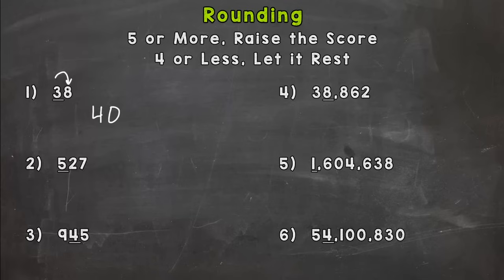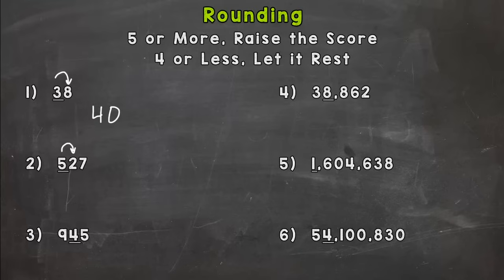Let's take a look at number two: 527. We are rounding to the hundreds place, seeing if this number is closer to 500 or 600. Let's take a look next door — that two is four or less, so we let the five rest. The five stays the same and our rounded number is 500. Everything to the right changes to a zero.